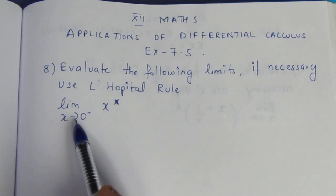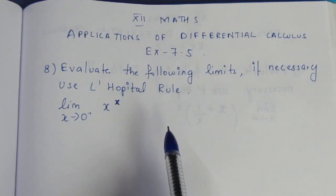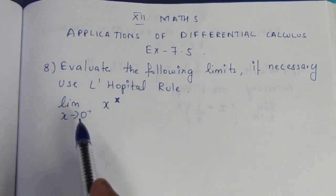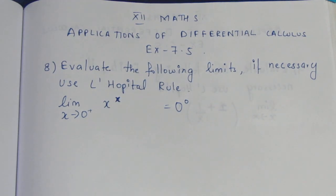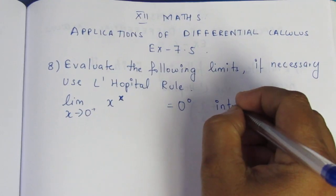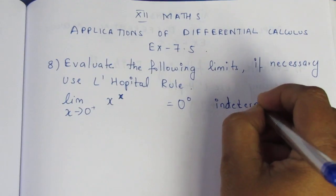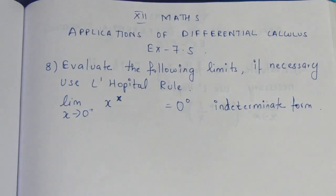First, evaluate the limit by substituting the limit value. After substitution, we get an indeterminate form — specifically 0 to the power 0. Substituting 0 gives 0 power 0, which is an indeterminate form.